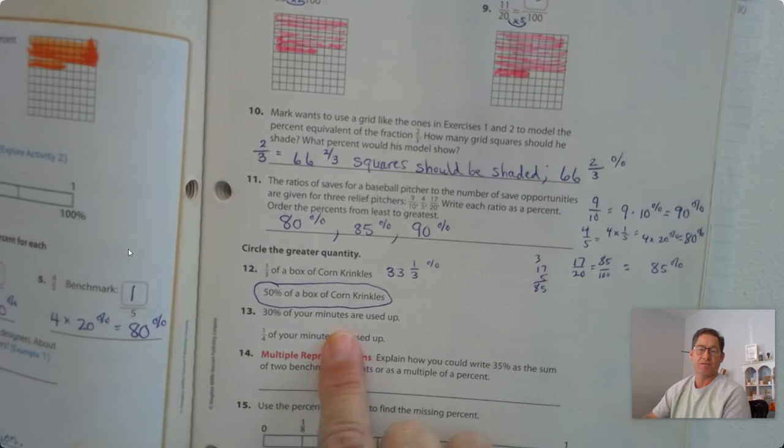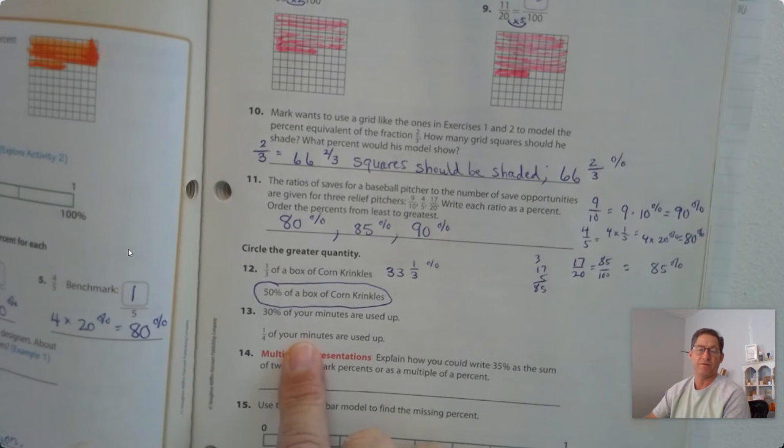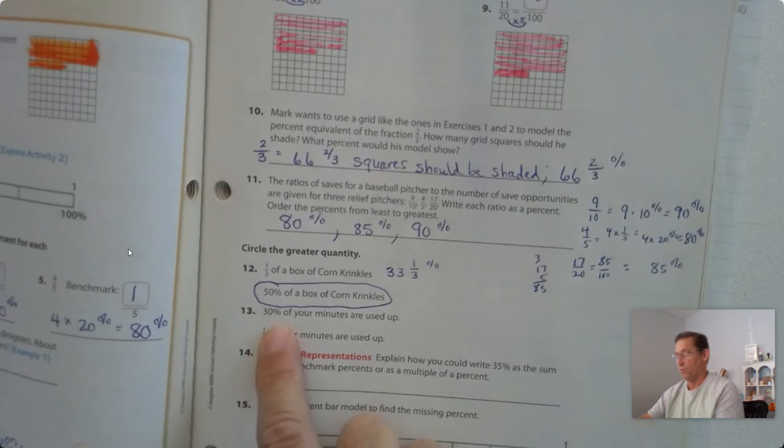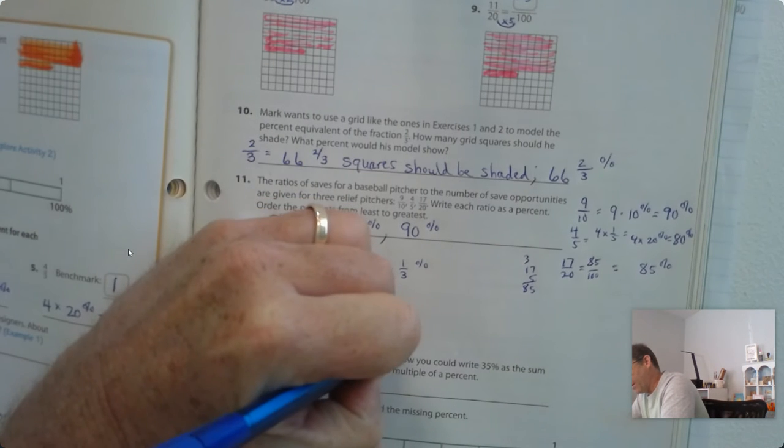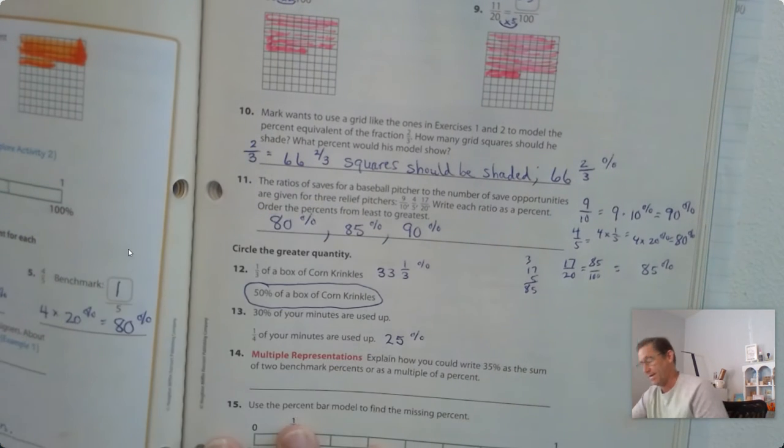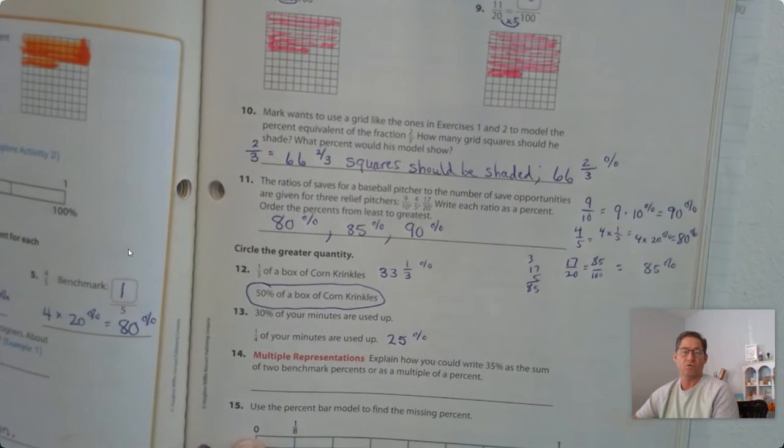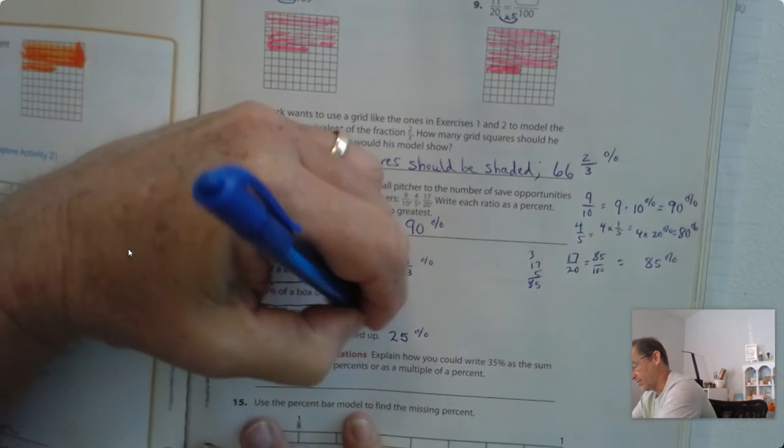30% of your units are used up. One fourth of your units are used up. Again, one fourth is the same as 25%. So which one is a greater quantity? 30%.